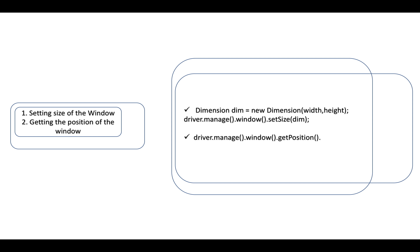Using driver.navigate().back() and driver.navigate().forward() you can navigate browser history, but you cannot do that with driver.get(). How to maximize the window: the command is driver.manage().window().maximize(). To set the size of a window, you create an instance of Dimension, pass the width and height, then pass the Dimension object into driver.manage().window().setSize(dimension).